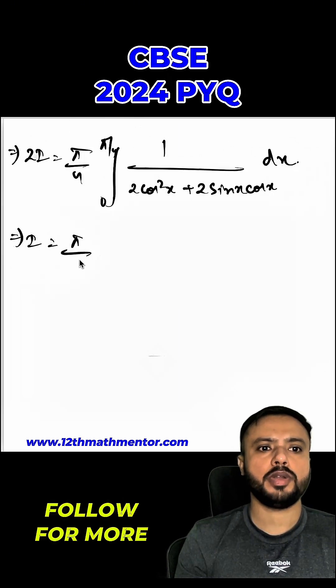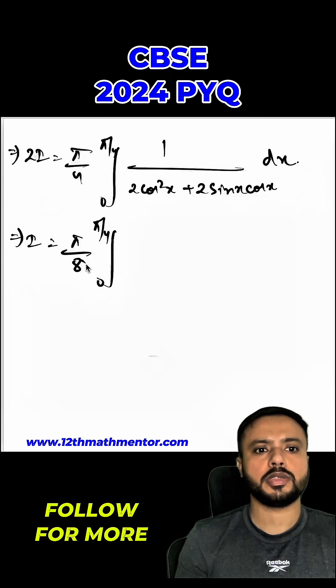So, i will be equal to pi upon 8, 0 to pi upon 4. So, this 2 also will come out of the integral. So, I can multiply the denominator by 2. So, it will be 1 upon cos square x plus sine x cos x dx.